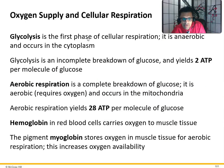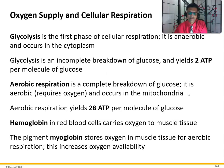Glycolysis is the first phase of cellular respiration. It is anaerobic and occurs in the cytoplasm. Glycolysis is an incomplete breakdown of glucose and yields 2 ATP per molecule of glucose. Aerobic respiration — with oxygen — is the complete breakdown of glucose. It is aerobic, requires oxygen, and occurs in the mitochondria, yielding 28 ATP per molecule of glucose. Hemoglobin in red blood cells carries oxygen to muscle tissue, and the pigment myoglobin stores oxygen in muscle tissue for aerobic respiration, increasing oxygen availability.